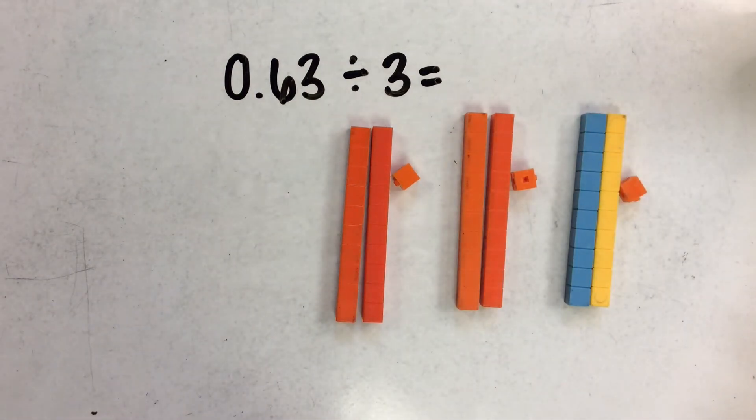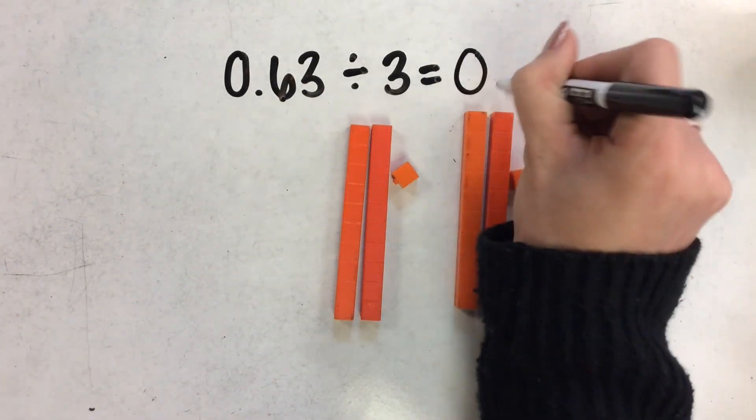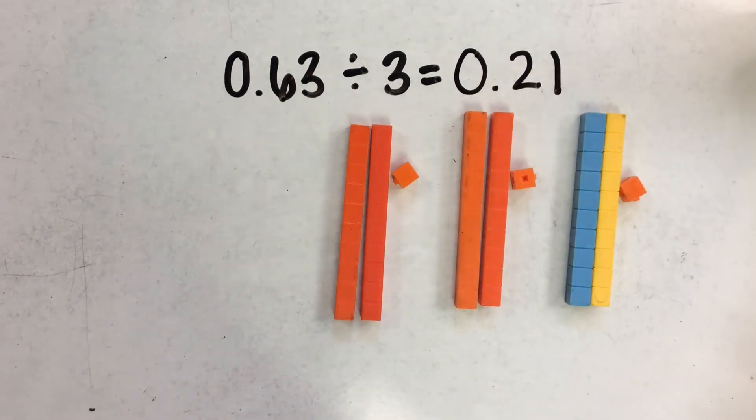And there's my 3 groups. And they're all equal. There is 21 hundredths in each group.